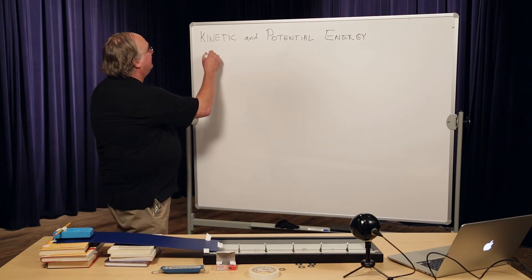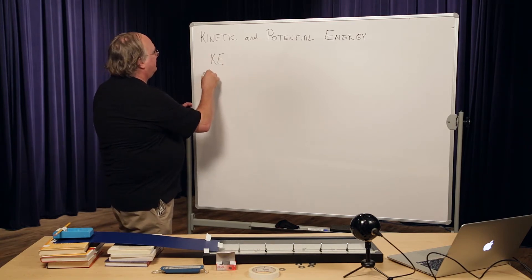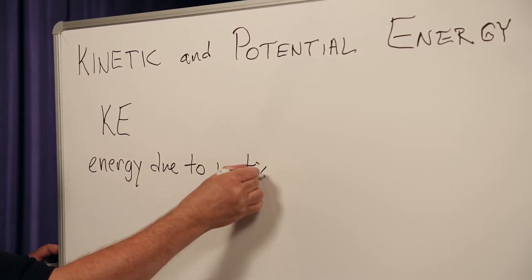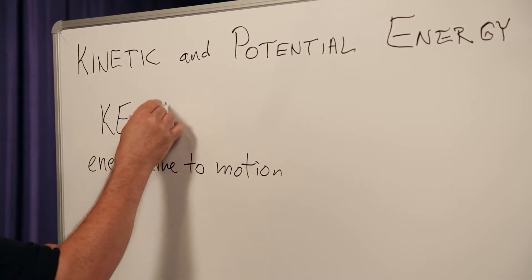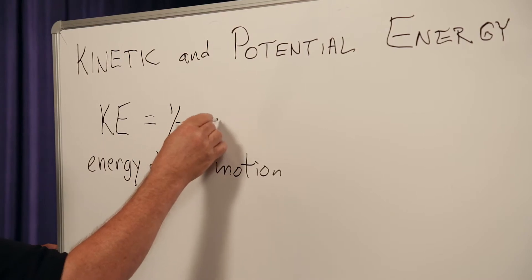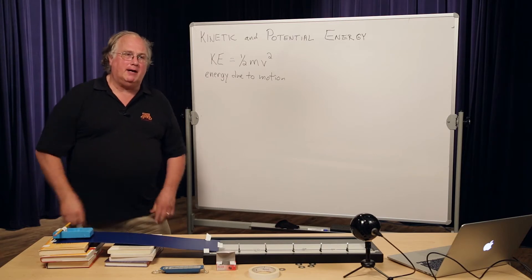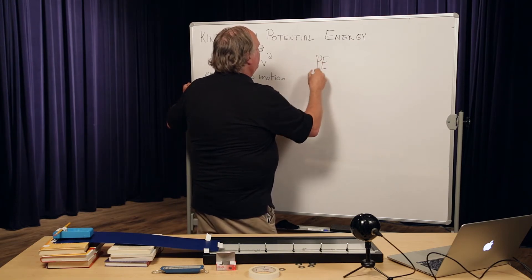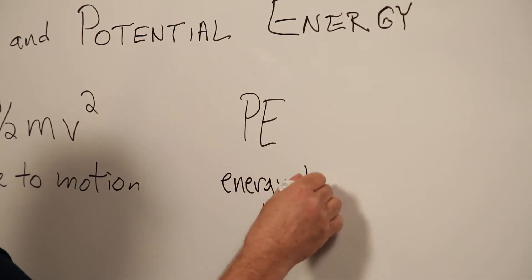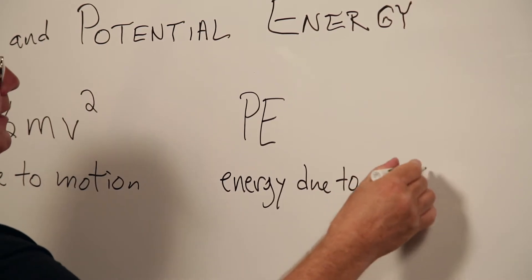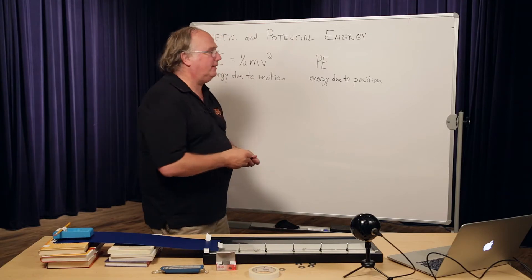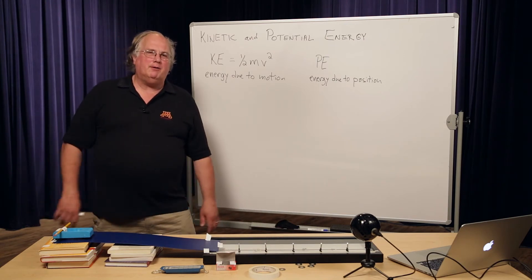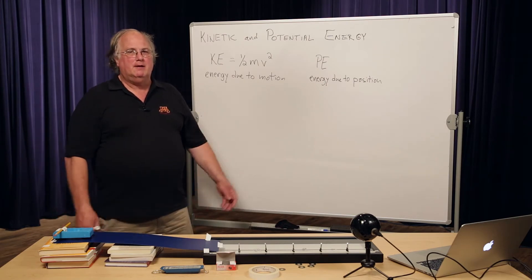The easiest one is kinetic energy. Kinetic energy is energy due to motion. Moving things have kinetic energy, and the formula for KE is one half times the mass times the velocity squared. That's not the only kind of energy there is. There's also potential energy, which is energy due to position. So if something's in a particular place, it has potential energy.